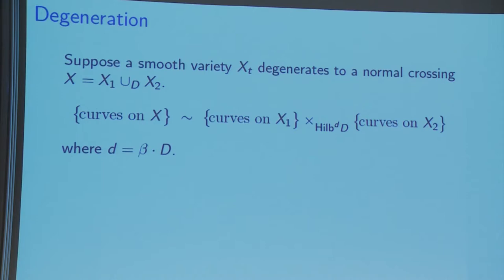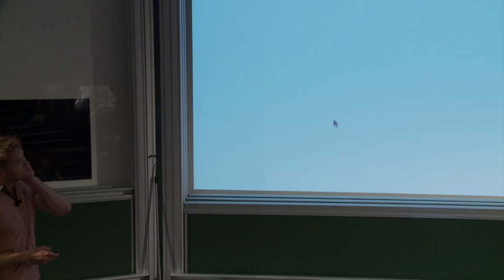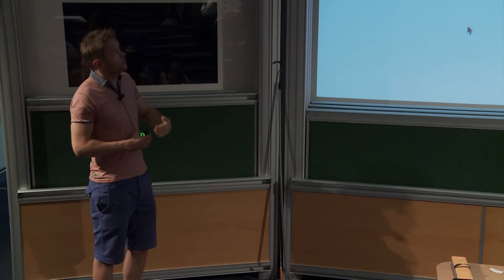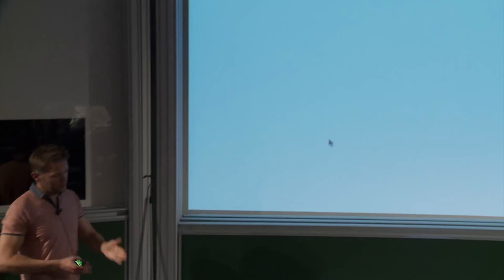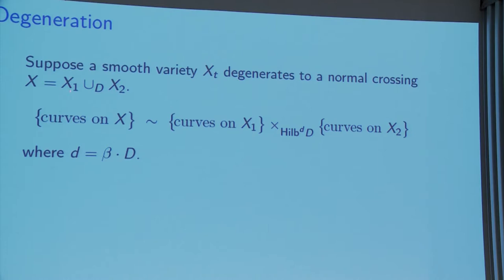Now we come to the hard bit. We need to degenerate to make our geometry simpler. I'll describe the general picture due to Jun Li — he set this up in Gromov-Witten theory initially but there's a similar theory in stable pairs; I'll concentrate on stable pairs. You have deformation invariance of stable pair invariants as you deform the variety, and you'd like to deform to something singular, in particular some normal crossing thing, and be able to compute there.